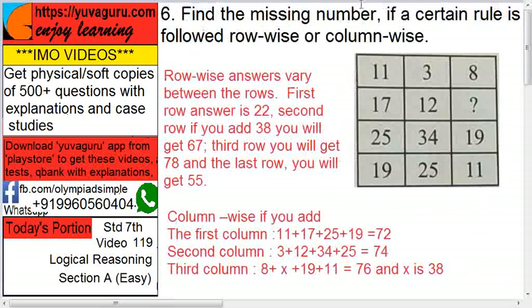Next, find a missing number. If a certain rule is followed row-wise or column-wise, we have to find this question mark. This comes from practice only. You read this, row-wise answers are different.